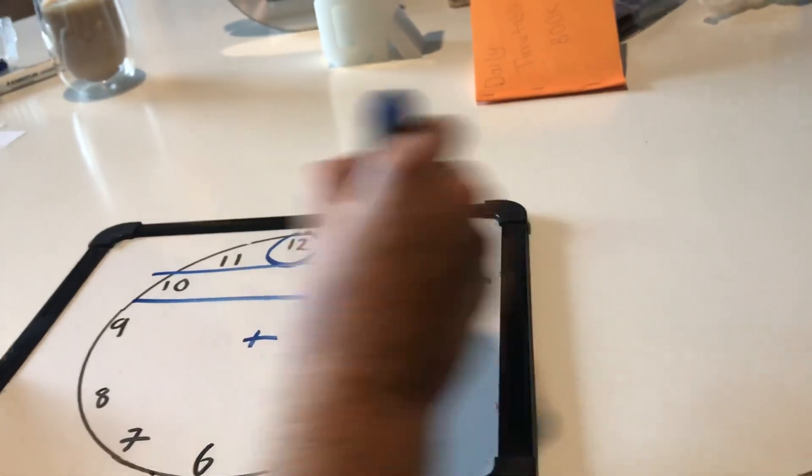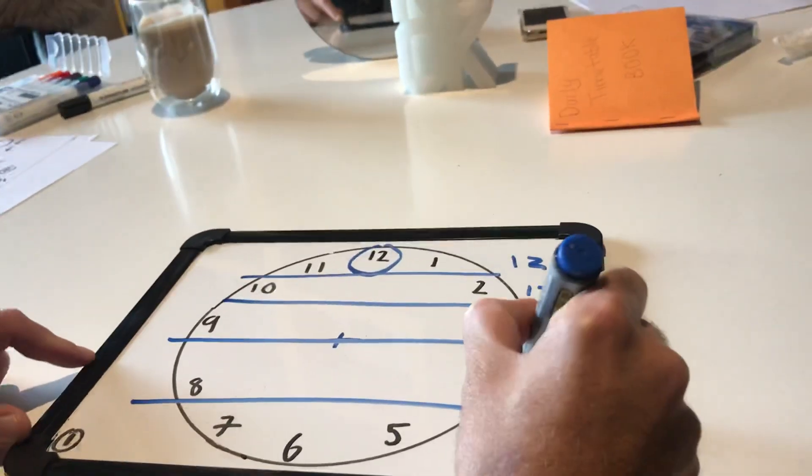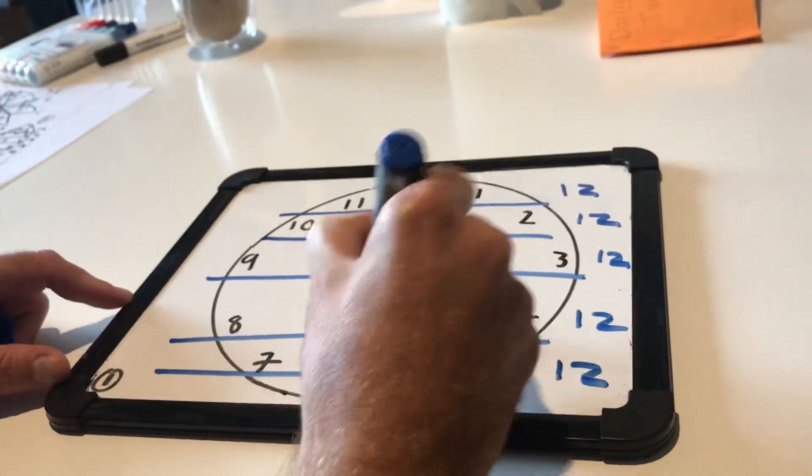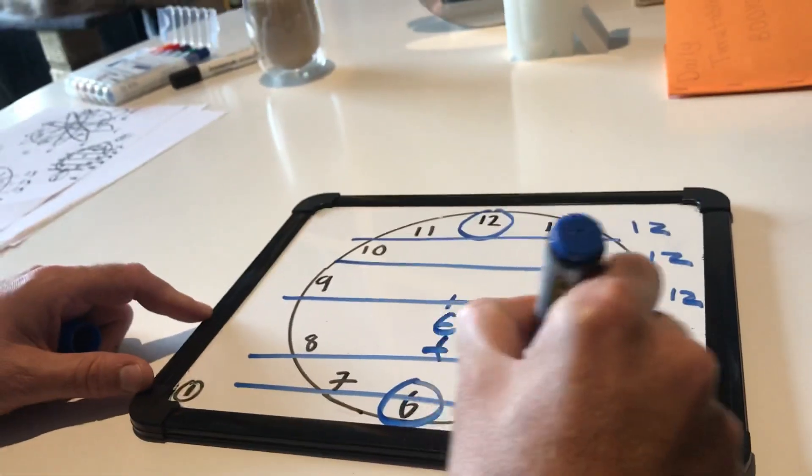11 and 1, 12. 10 and 2, 12. 9 and 3, 12. 8 and 4, 12. 7 and 5, 12. 6 plus 6 equals 12.